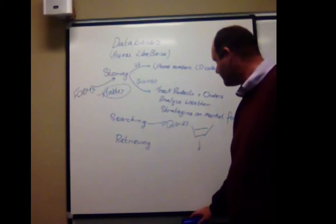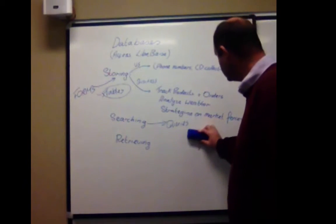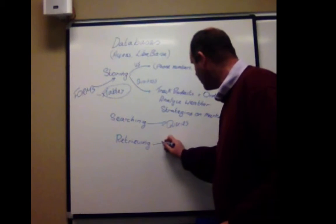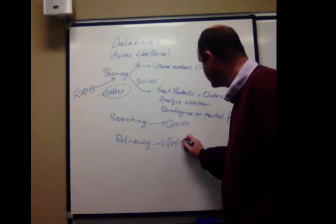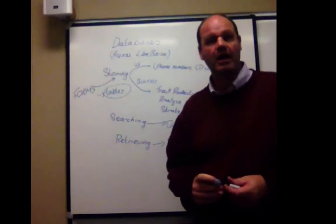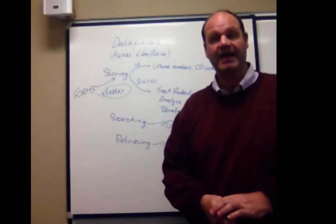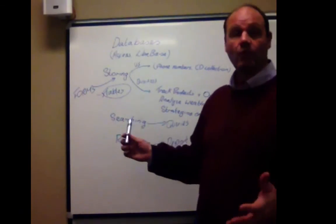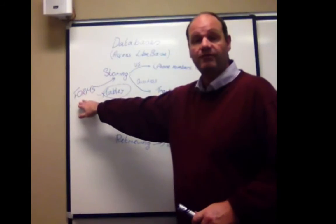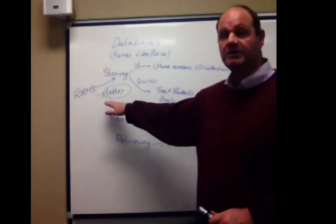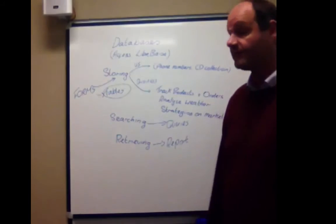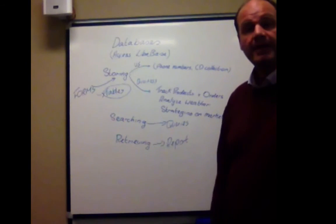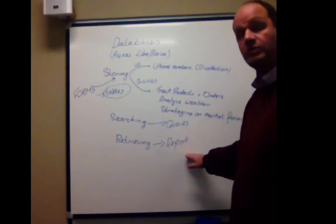Finally, once we have found what we wanted, it needs to be retrieved. That retrieving is shown in the form of reports. A report is a hard copy which can be printed and then given out. So databases have four main functions: one, using forms to input; two, using tables to store that information; three, using queries to find what we want from those tables; and four, using reports to display what we found.